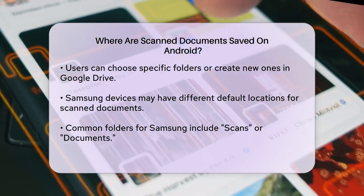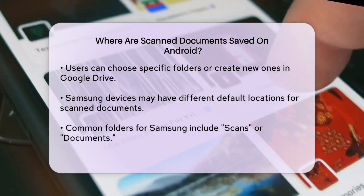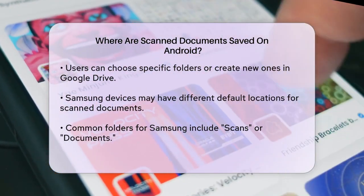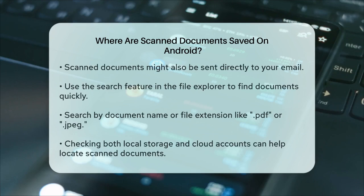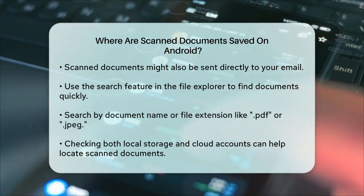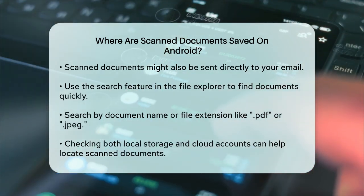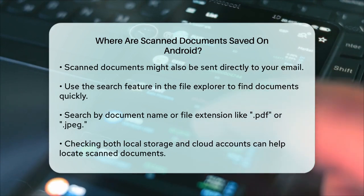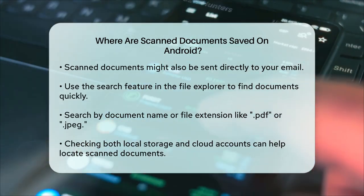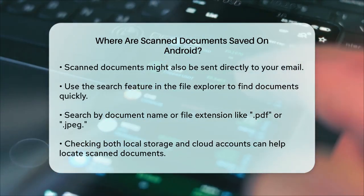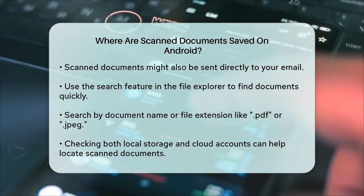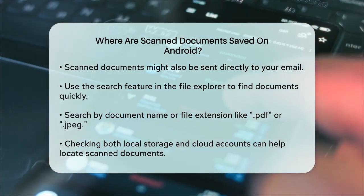To locate your scanned documents, you can use the search functionality in your device's File Explorer. Most file explorers have a search icon, usually a magnifying glass, where you can type the name of the document or the file extension, such as .pdf or .jpg, to find it quickly.